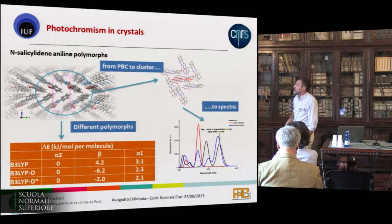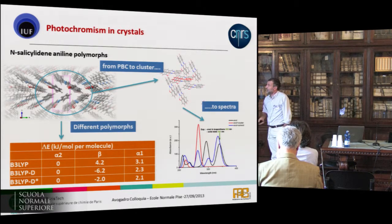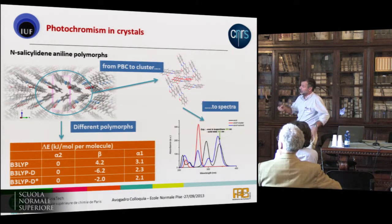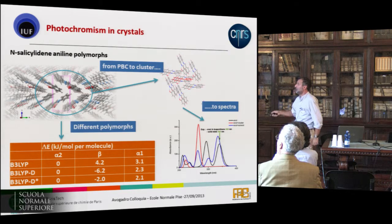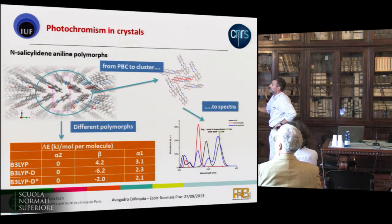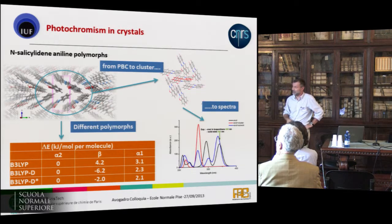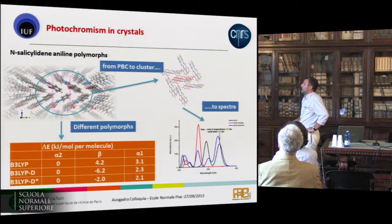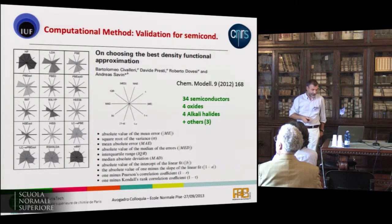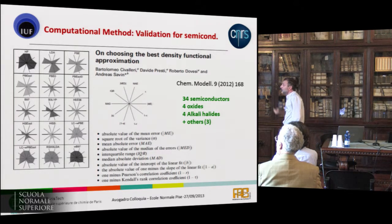More recently, using the same technique, we are studying photochromism in crystals. For an aniline crystal, we compute using periodic boundary conditions plus dispersion the relative stability of different polymorphs, then extract a cluster from the PBC calculation and apply the QM/QM' plus embedding to compute the absorption. These are very preliminary results — there is a larger shift, but this is a technical problem related to the type of charges used.